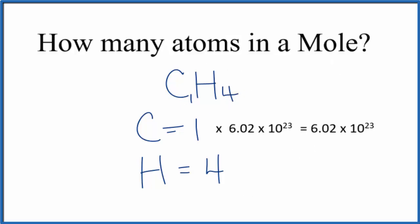For the hydrogen, we would multiply the four hydrogen atoms that we have here in methane times Avogadro's number again. And that would give us the number of hydrogen atoms in one mole of methane.